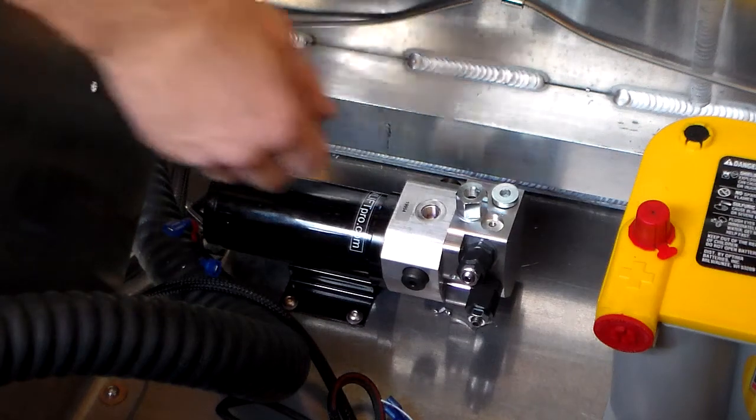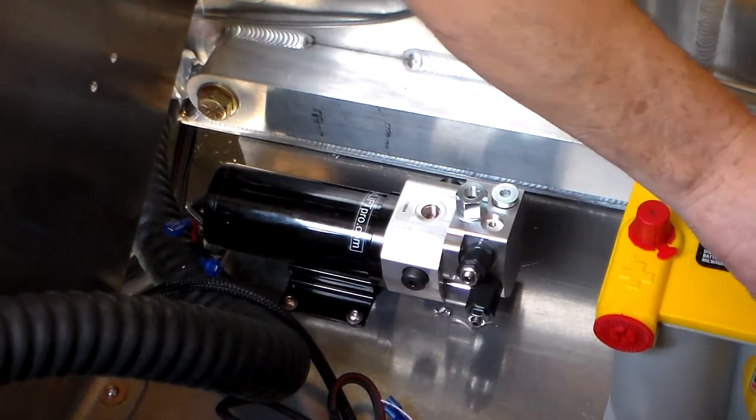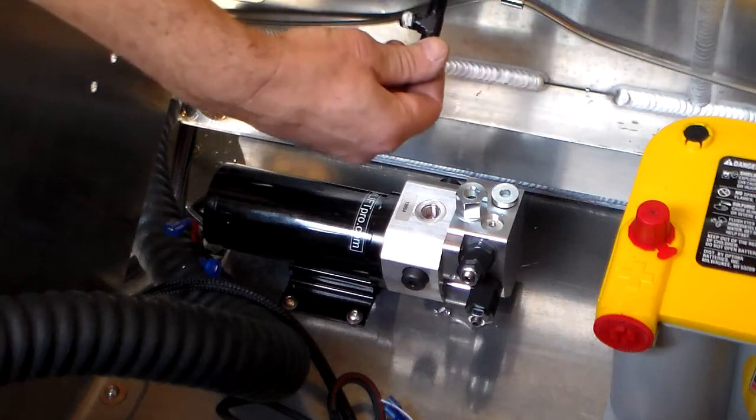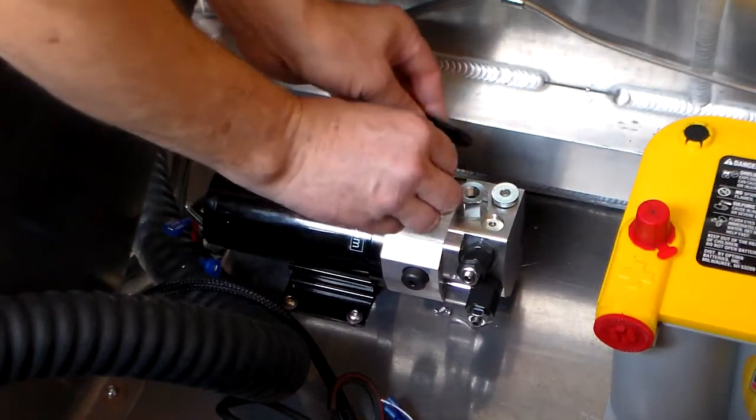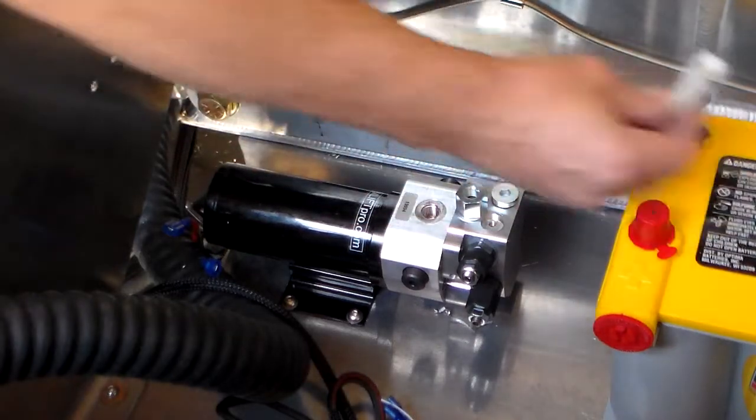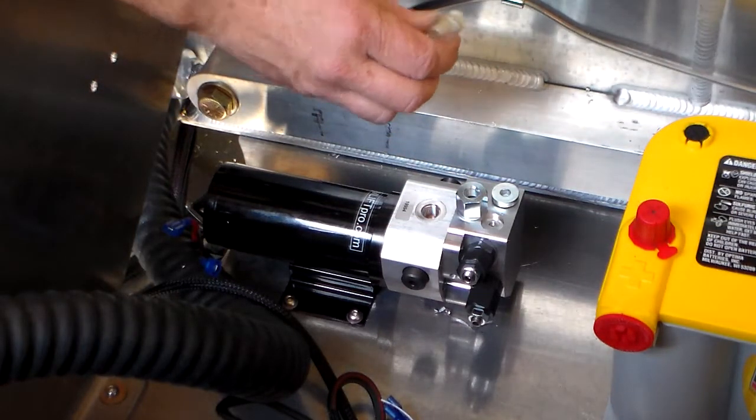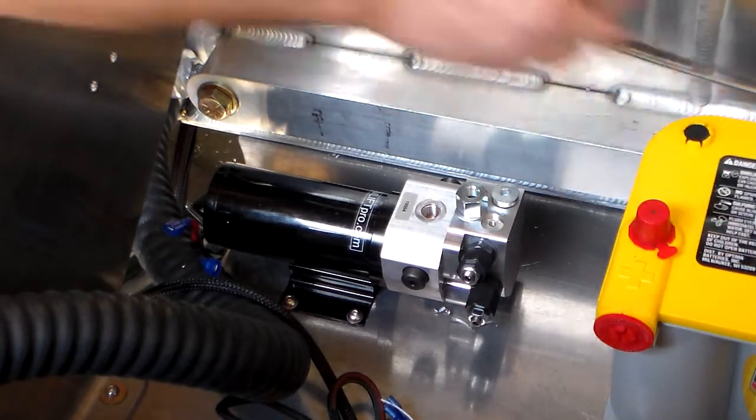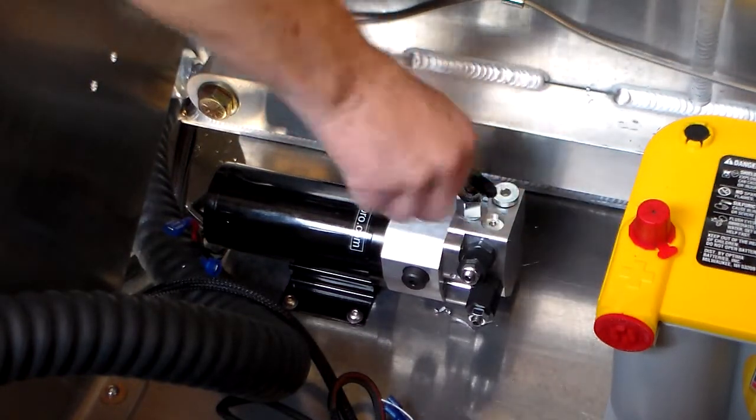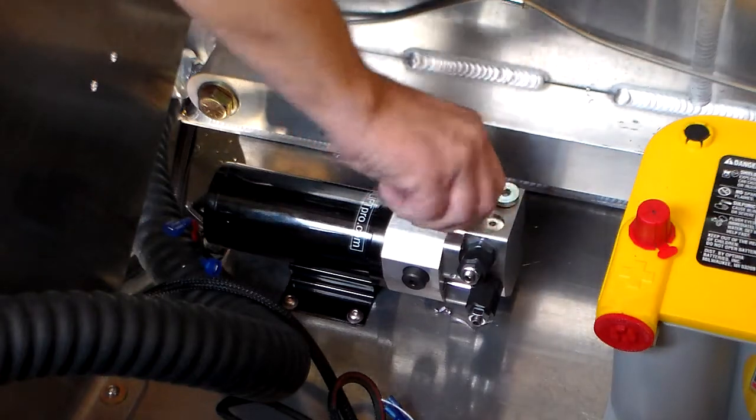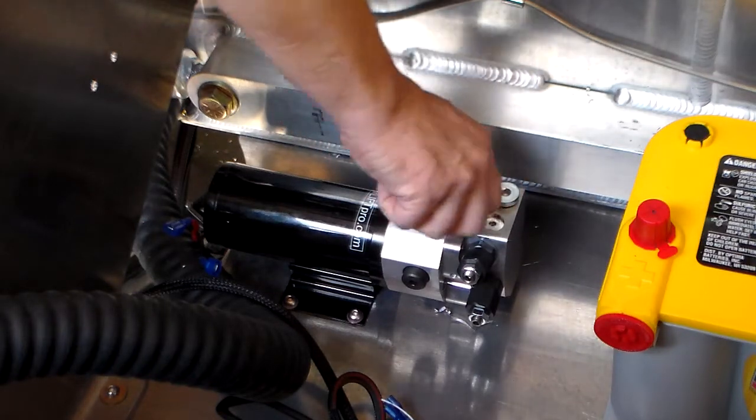You want to put in the T fitting first, because after this fitting goes in you won't be able to turn the hose barb one. If you put that one in before the T fitting, you won't be able to spin the T fitting.